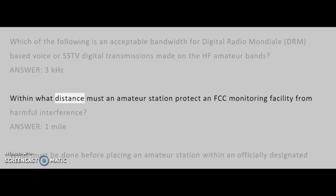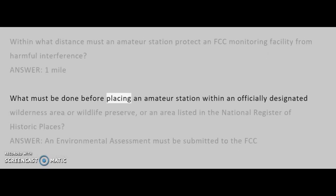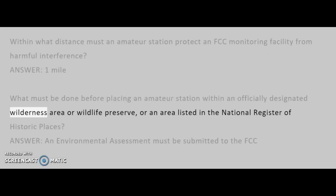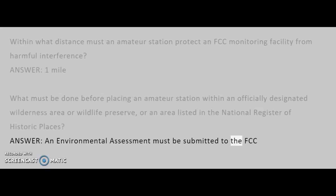Within what distance must an amateur station protect an FCC monitoring facility from harmful interference? Answer: 1 mile. What must be done before placing an amateur station within an officially designated wilderness area, wildlife preserve, or an area listed in the National Register of Historic Places? Answer: An environmental assessment must be submitted to the FCC.